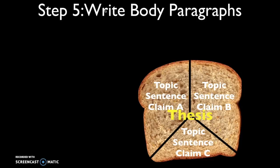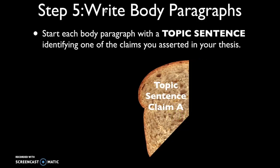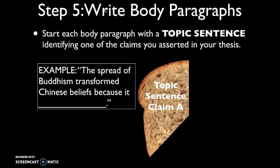Once you have that thesis written — which ultimately connects the various claims you've identified by grouping the documents — you want to focus on each of the individual body paragraphs. Start each body paragraph with a topic sentence that identifies one of the claims you asserted in your thesis. For example, one topic sentence could look like: 'The spread of Buddhism transformed Chinese beliefs because it...' — and you have to complete that claim by identifying exactly what transformations are suggested by that group of documents.